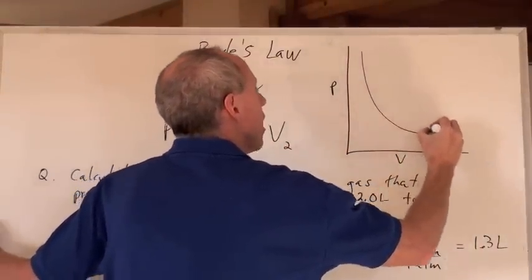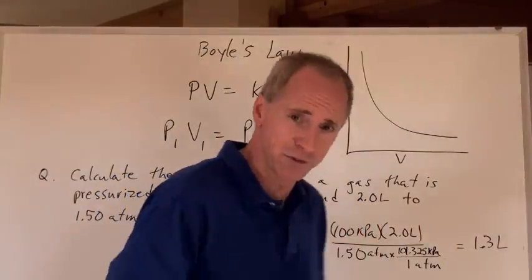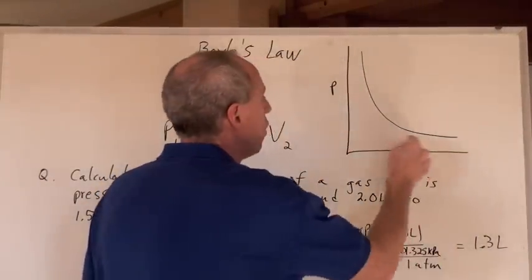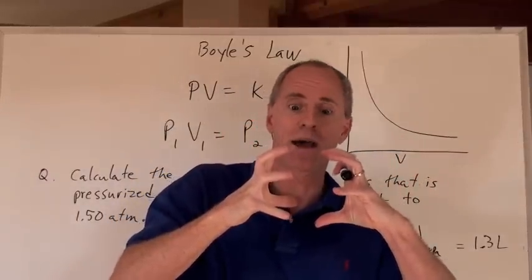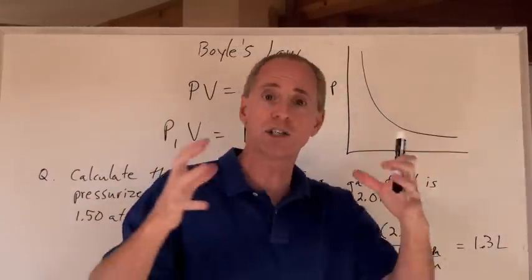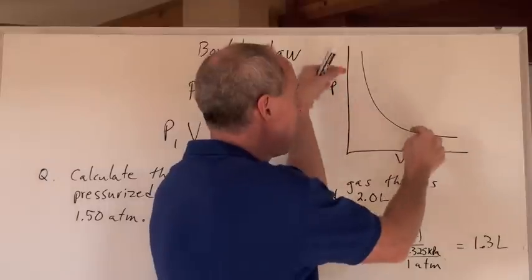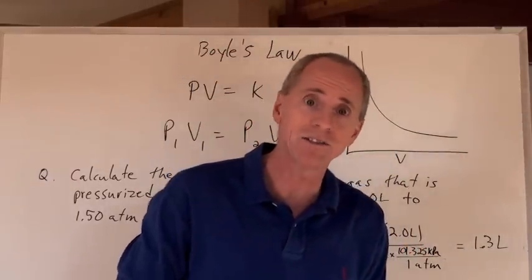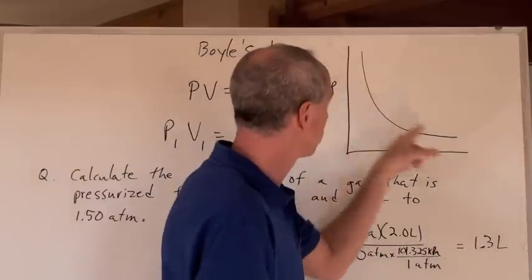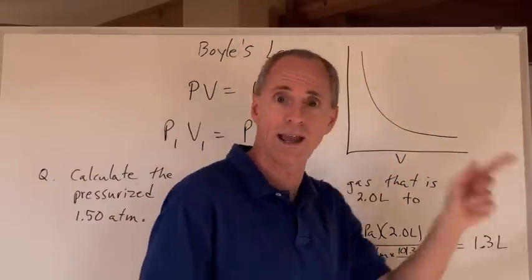So there is the graph for pressure versus volume. As the volume goes down, the pressure goes up. As the volume goes down, the pressure goes up. As the volume expands and increases, the pressure is going to decrease. But they never crash into the zeros here of both of those axes. And so we get an asymptote on both of those y and x axes.